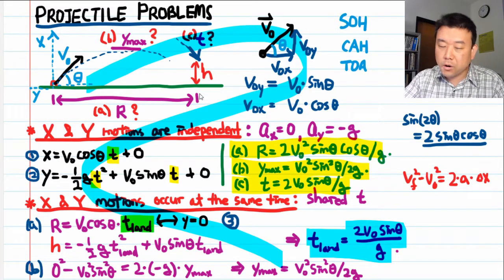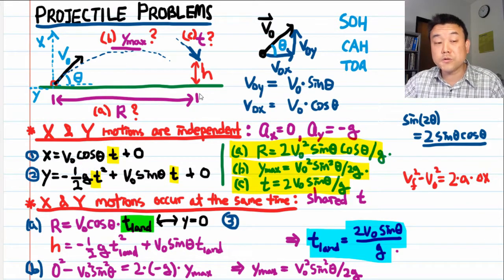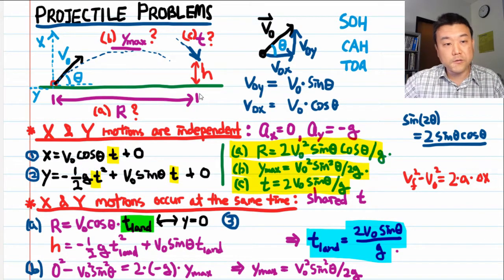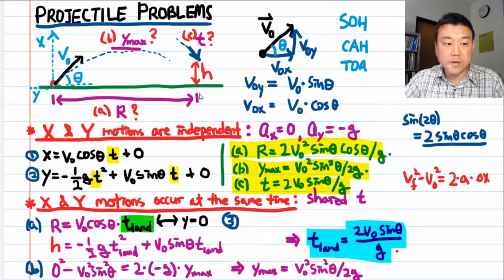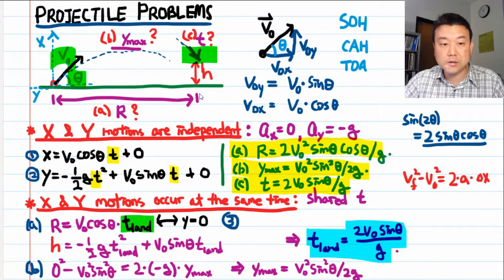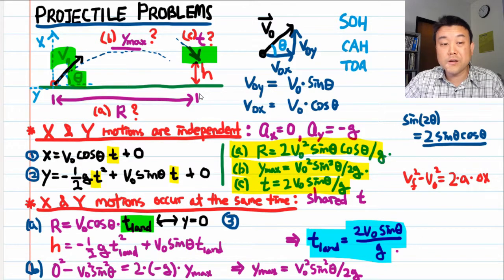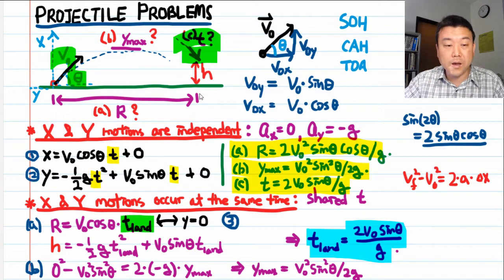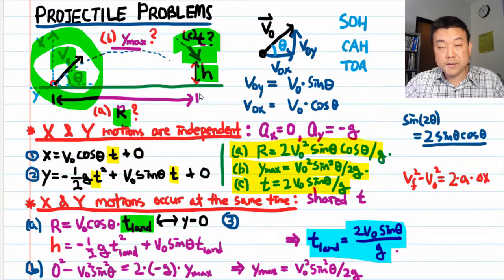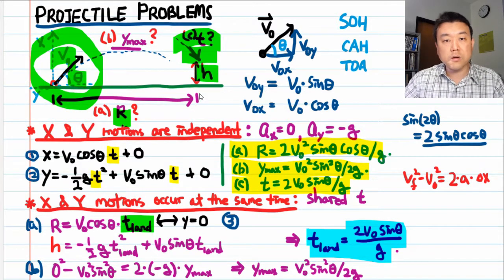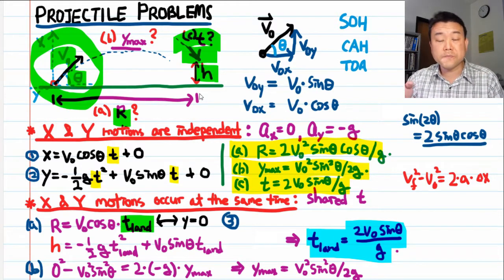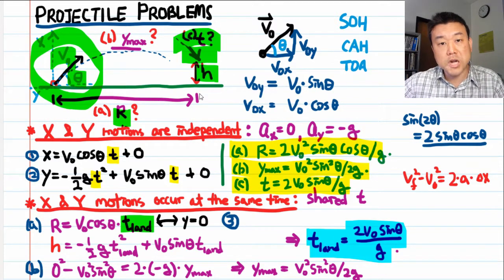Some more difficult projectile questions will give you information in a kind of backward way. For example, instead of giving you the initial velocity, and asking you for the final, which is very logical, easy to think sequentially, they might instead actually give you the final information. Maybe they give you final velocity, or they give you the range and height, and ask you for the initial information. And, if you are used to plugging in numbers at the very beginning and working through, how to do that backward can be challenging.